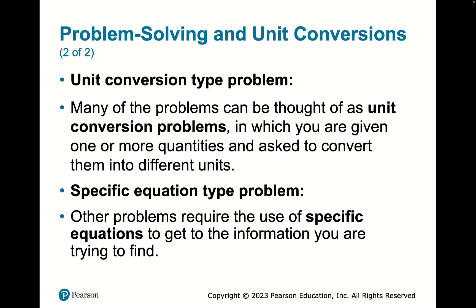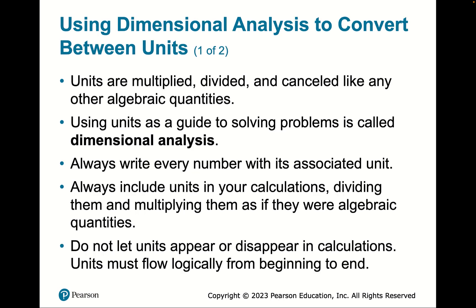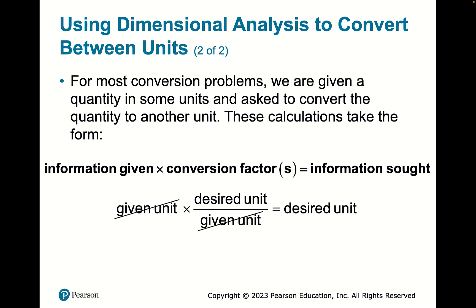Dimensional analysis is essentially multiplying by one — you know you're on the right track when units cancel out. Keep it organized so you can see where the units are going. For example, a dozen divided by 12 is multiplying by one. An exact conversion like 1 inch = 2.54 cm has infinite sig figs.